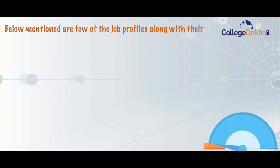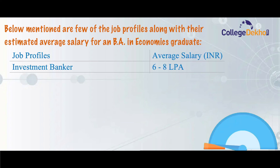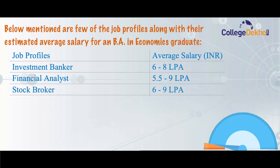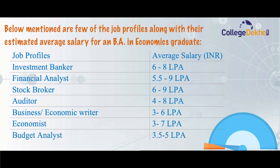Here are a few job profiles along with their estimated average salaries for a BA Economics graduate: investment banker — 6 to 8 lakh per annum; financial analyst — 5.5 to 9 lakh per annum; stock broker — 6 to 9 lakh per annum; auditor — 4 to 8 lakh per annum; business and economic writer — 3 to 6 lakh per annum; economist — 3 to 7 lakh per annum; and budget analyst — 3.5 to 5 lakh per annum.